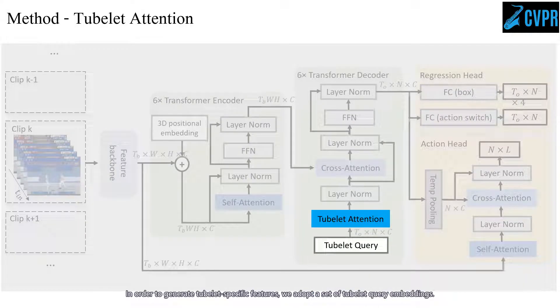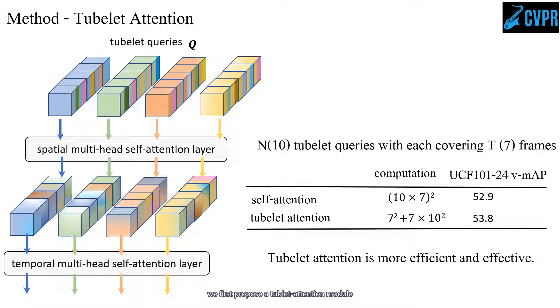In order to generate tubelet-specific features, we adopt a set of tubelet query embeddings. To model spatial-temporal relations in the tubelet queries, we propose a tubelet attention module. The tubelet attention module contains two self-attention layers: spatial attention learns spatial relationships between bounding boxes on each frame independently, and temporal attention learns to link boxes for each action over time.